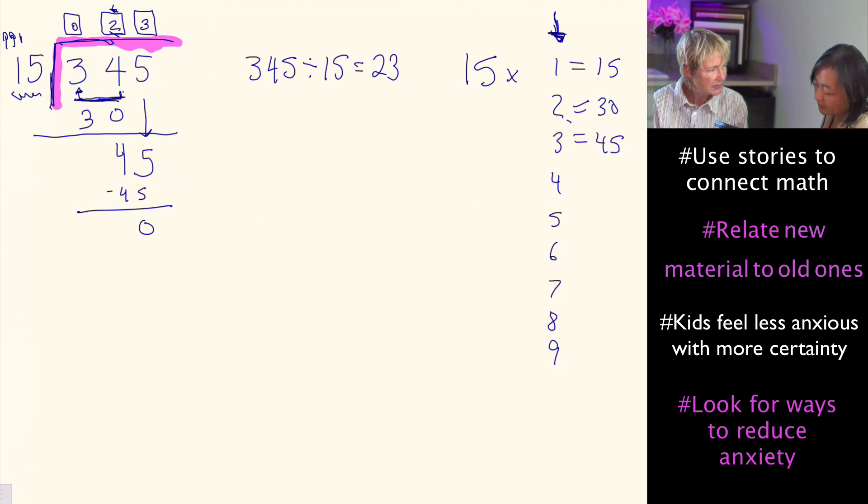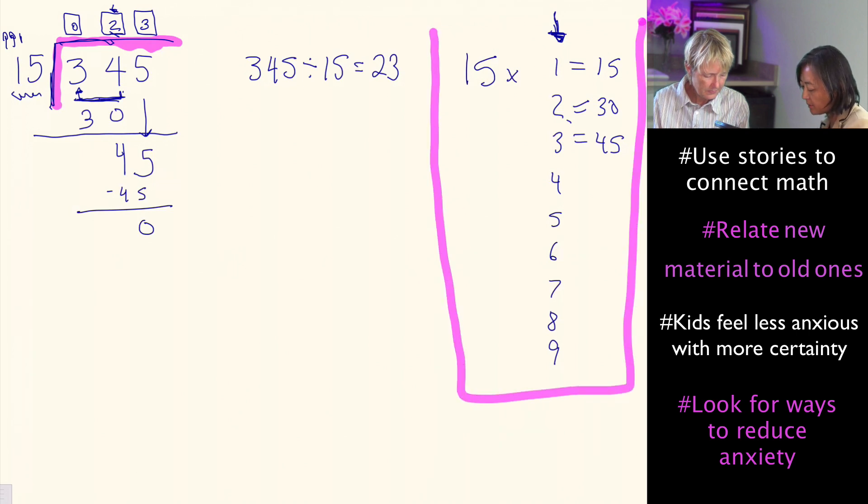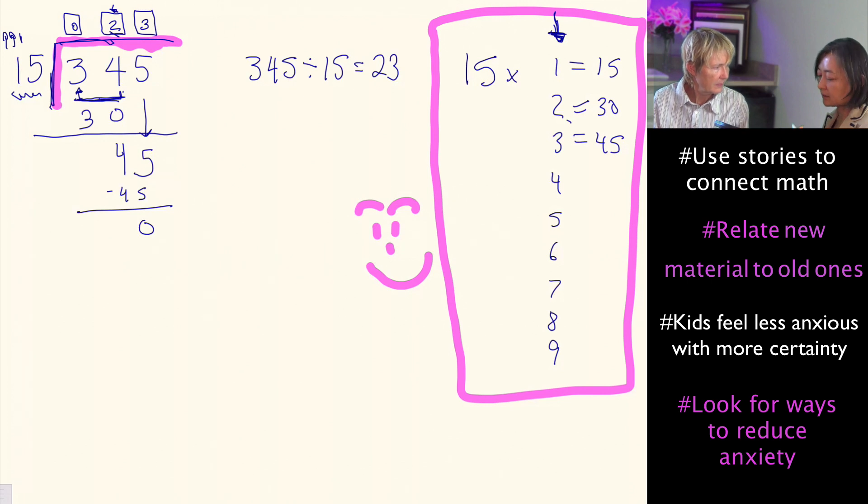Especially for kids who are just starting with division, starting with something they already know calms them down. It's no longer a terrible guessing job—it's more of a lookup table, which is much easier for kids. Whenever you introduce a new thing, you want to minimize the anxiety. Little by little, the kid says, learning a new thing isn't that bad. It's just adding a little bit on top of what I already know. Reducing the anxiety for kids is very important because that retains the joy.